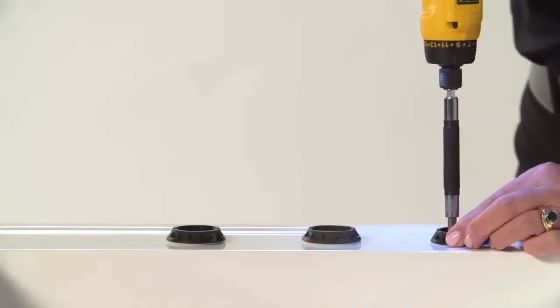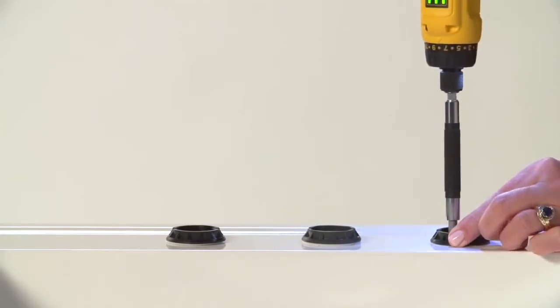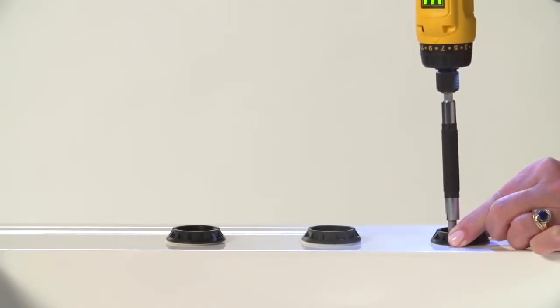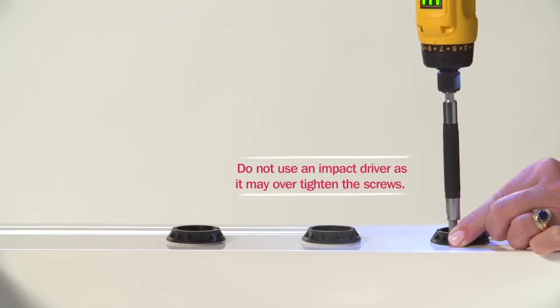Look down inside each anchor and lightly tighten both screws using a power screwdriver or drill bit. Be sure you do not use an impact driver.